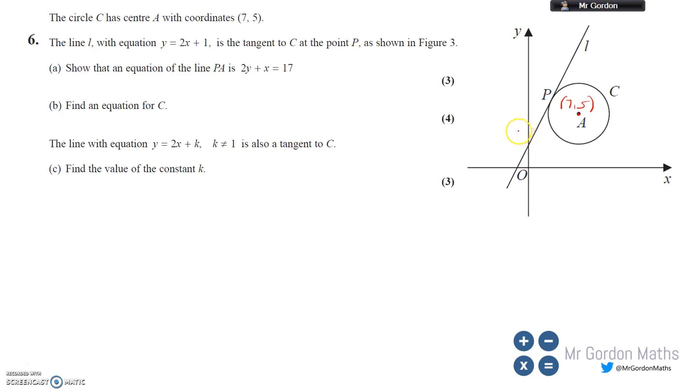The line L has equation y=2x+1, and it's a tangent to the circle. We know that the radius meets a tangent at 90 degrees, so I can put that in - that knowledge might help further down the road.